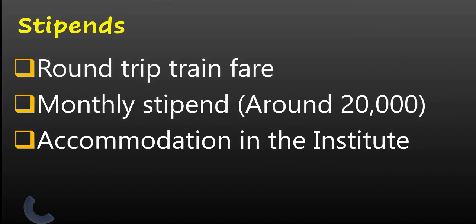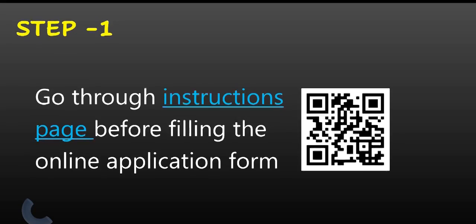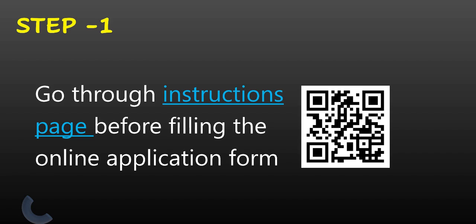In the next couple of minutes, I will tell you the step-by-step process of filling the application form. The first thing is, you have to go through the instruction page before filling the application online. You have to keep in mind all the instructions that I had already told you before filling the application form. You can scan this QR code to get the instruction page.